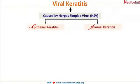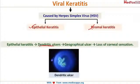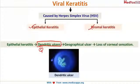Both epithelial and stromal HSV keratitis are present in the cornea. Epithelial keratitis is characterized by dendritic ulcers — these are true dendrites. We have seen a pseudodendrite in acanthamoeba, so the dendrites that occur in viral keratitis are called true dendrites. Look at this picture showing a beautiful branching pattern of the ulcer.